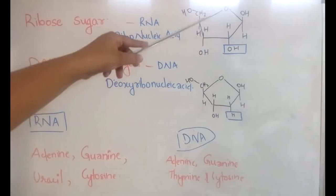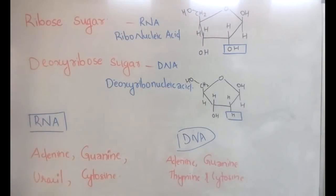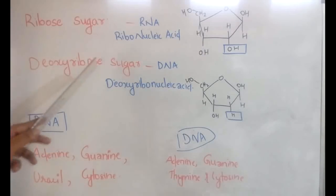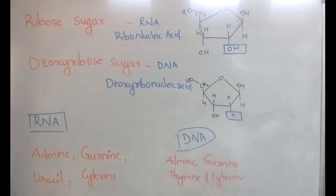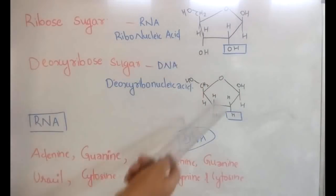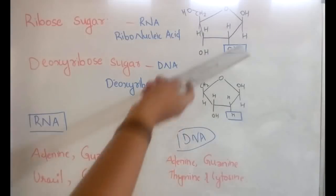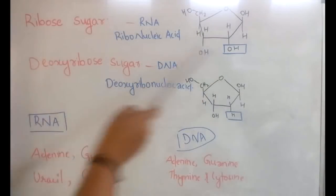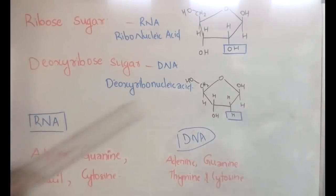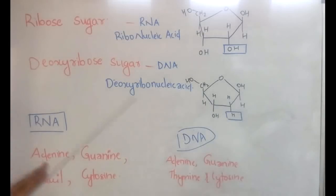The ribose sugar structure has OH, H, H, OH, H, OH, and CH₂OH groups. In deoxyribose sugar, which makes up DNA, the OH group at a particular position of the ribose sugar gets replaced by hydrogen. That is why it is called deoxy — deoxy meaning the OH group is replaced. Make sure you can identify which is the ribose sugar and which is the deoxyribose sugar; you can expect these kinds of questions in the BHU exam.